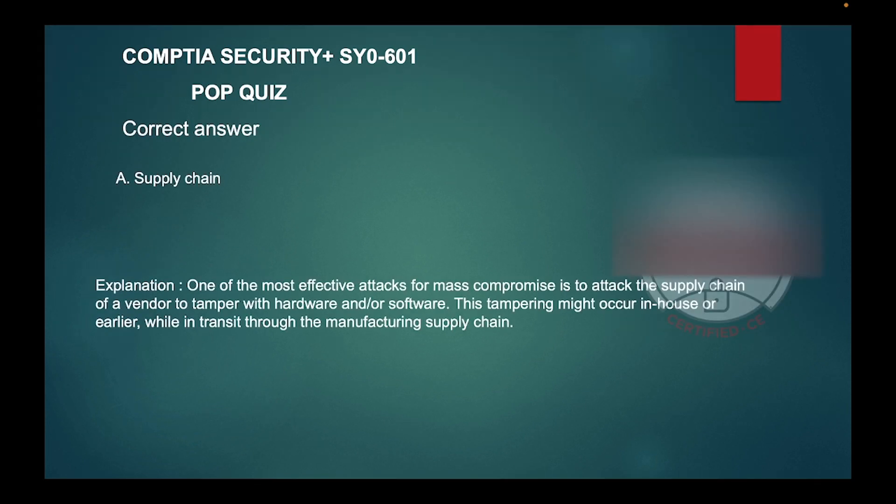The correct answer is A, Supply Chain. One of the most effective attacks for mass compromise is to attack the supply chain of a vendor to tamper with hardware and/or software. This tampering might occur in-house or earlier while in transit through the manufacturing supply chain.